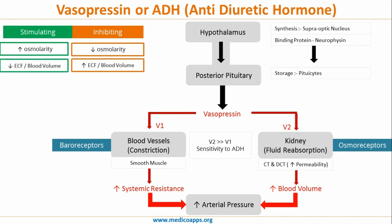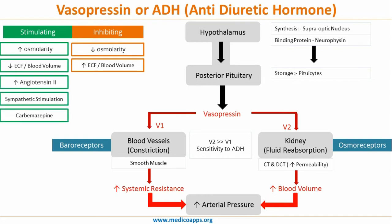The same logic applies for blood volume or extracellular fluid. If blood volume or extracellular fluid decreases, blood becomes thicker and the body wants to conserve fluid, so this is a stimulating factor for vasopressin secretion. Angiotensin 2 is also an important stimulating factor for anti-diuretic hormone.